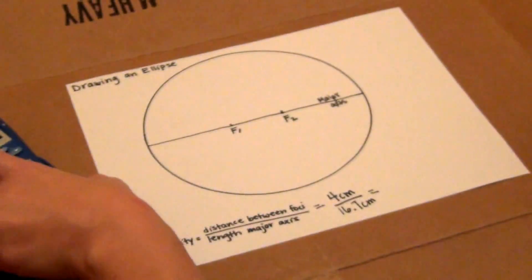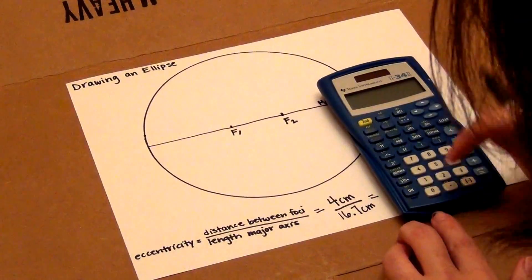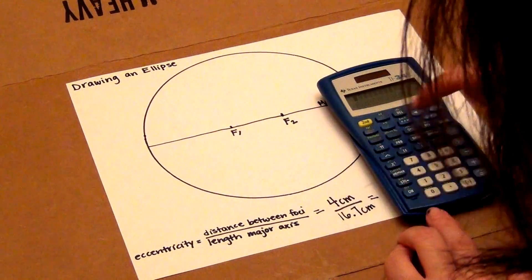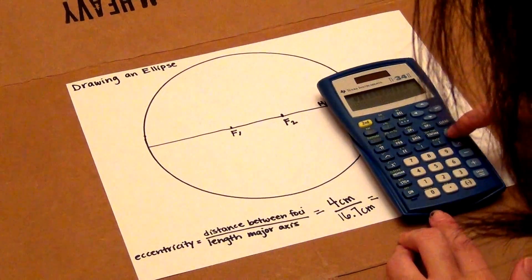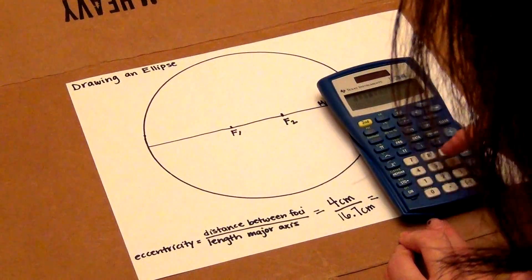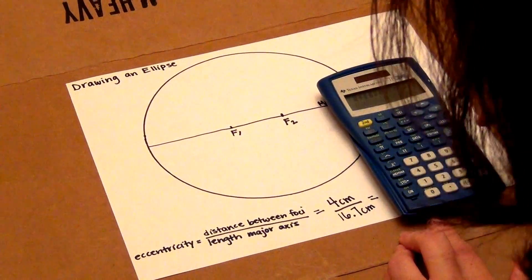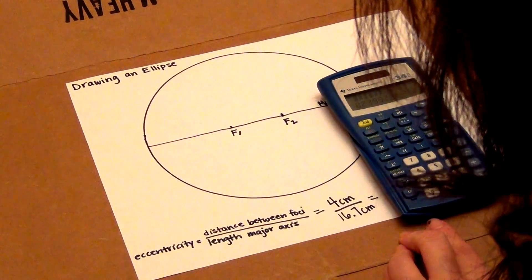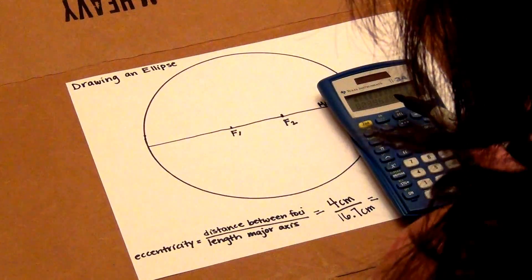Then you take your calculator and you do 4 divided by 16.7. The answer is 0.2395.